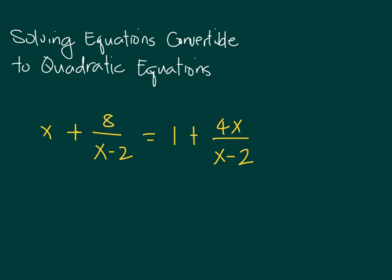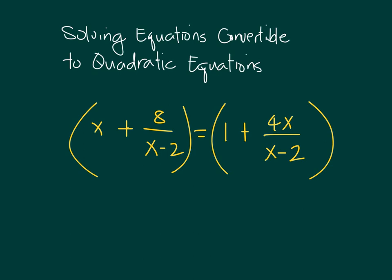First, the idea is you have to eliminate the denominators — in this case both of them are x minus 2. Sometimes you can have different denominators, but in this example we only have one. So how do we eliminate the denominator x minus 2? You have to multiply both sides of the equation by an expression that can eliminate x minus 2, and that expression is x minus 2 itself. So we choose to multiply both sides by x minus 2.